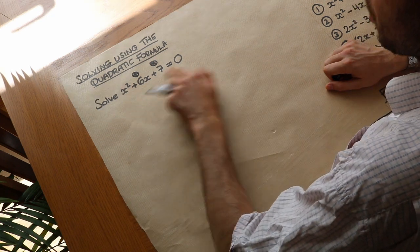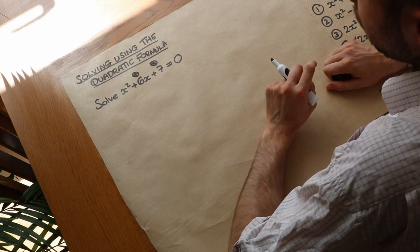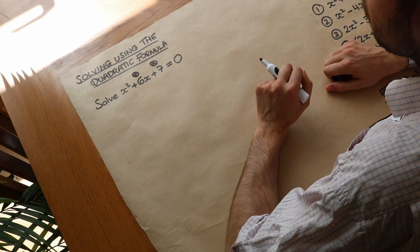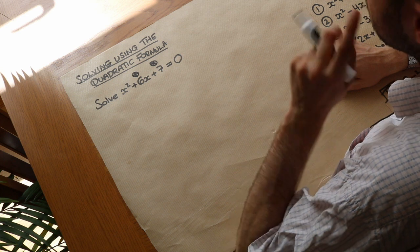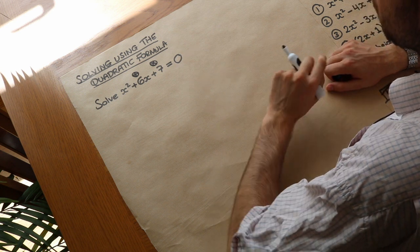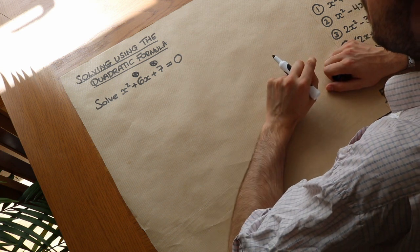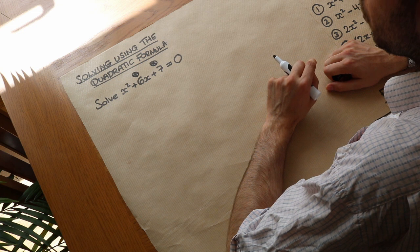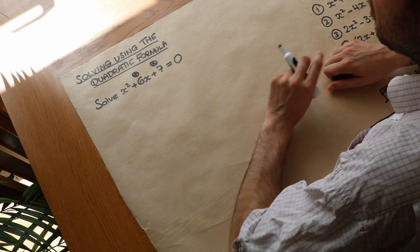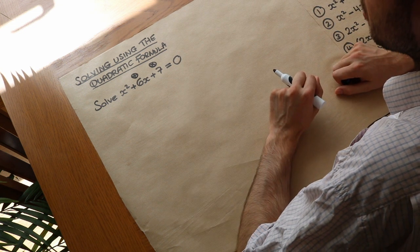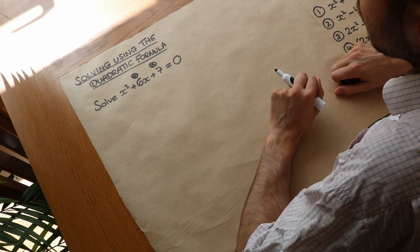Now if you get an equation that you can't factorize, there are two approaches to solve it. One is to complete the square, which we explore in another video, and the other is to use something called the quadratic formula, which is like a ready-made formula that we can just substitute some values in.